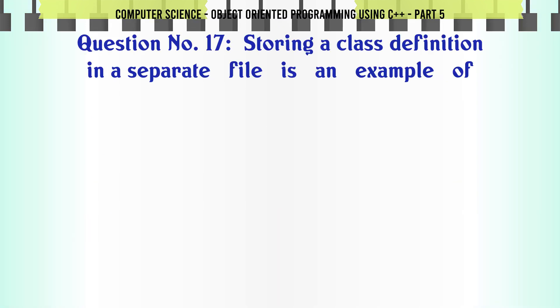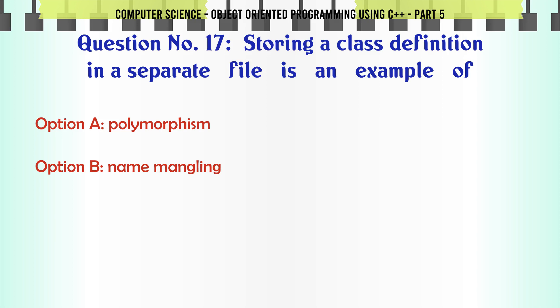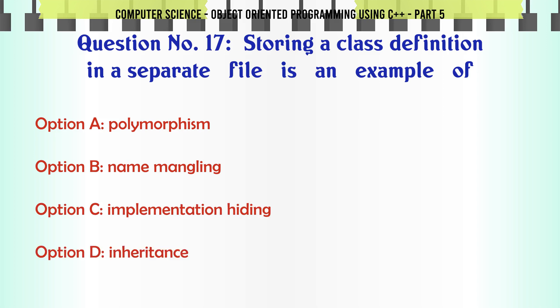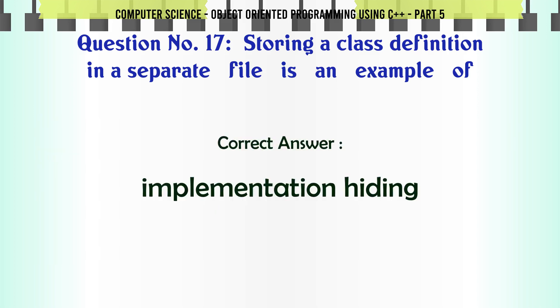Storing a class definition in a separate file is an example of. A. Polymorphism. B. Name mangling. C. Implementation hiding. D. Inheritance. The correct answer is: Implementation hiding.